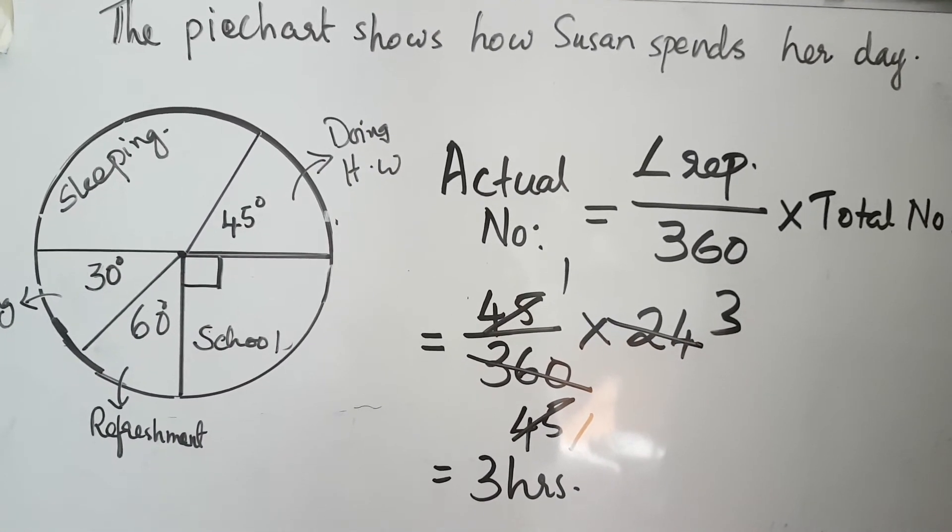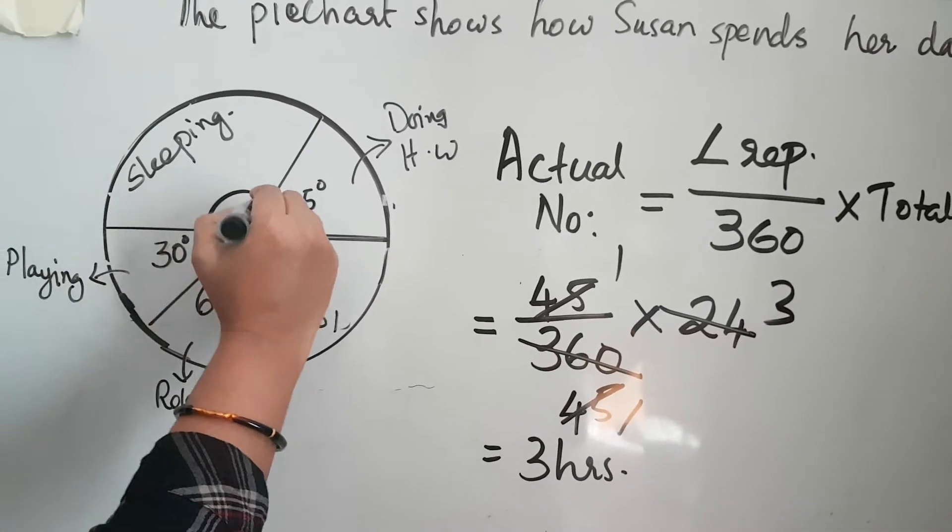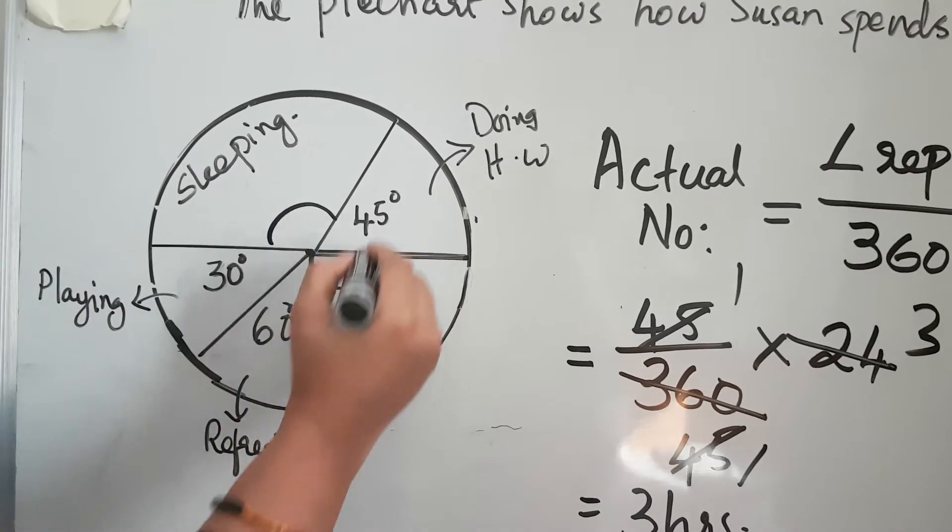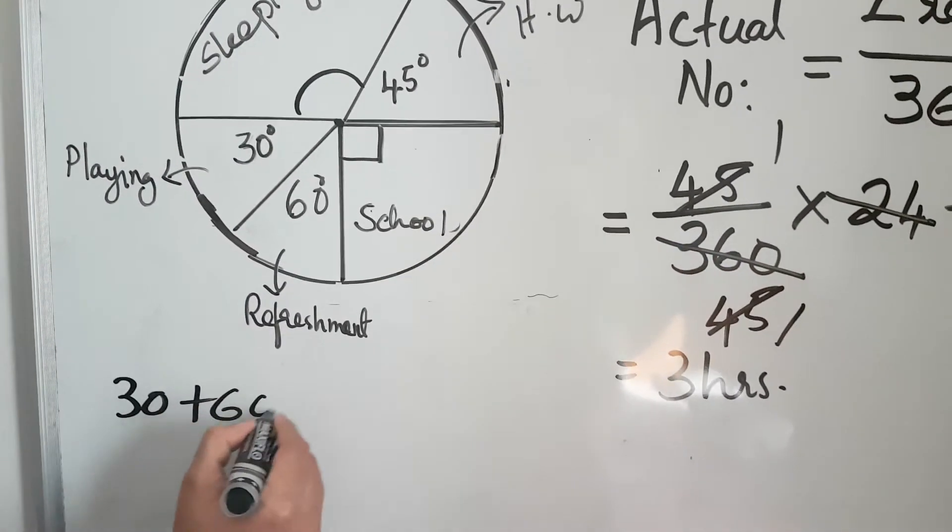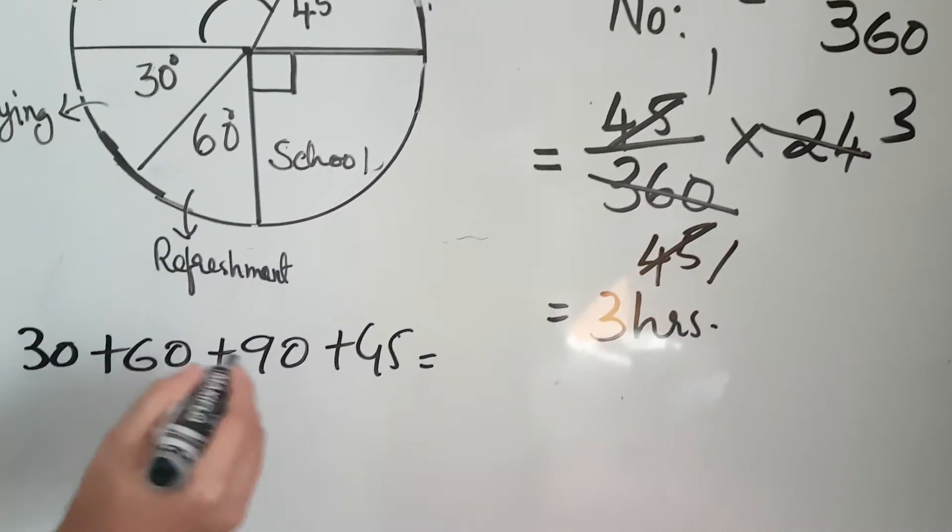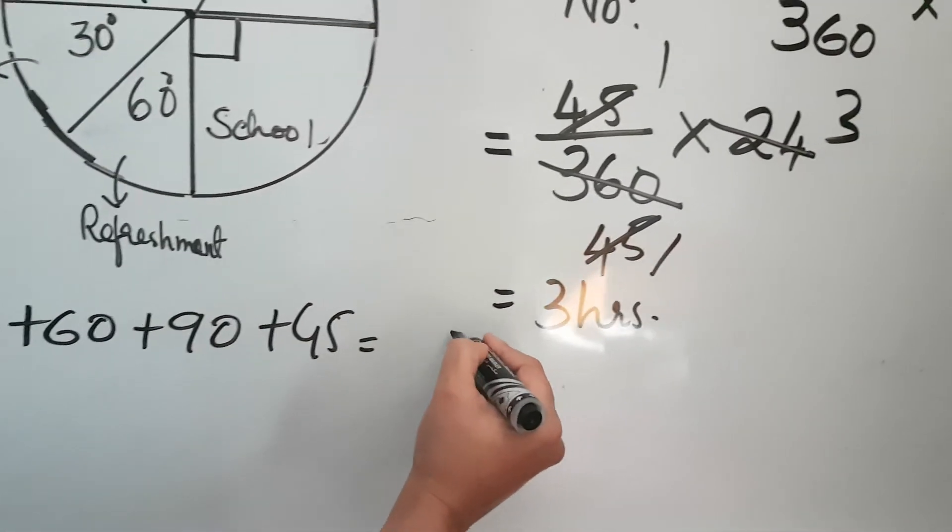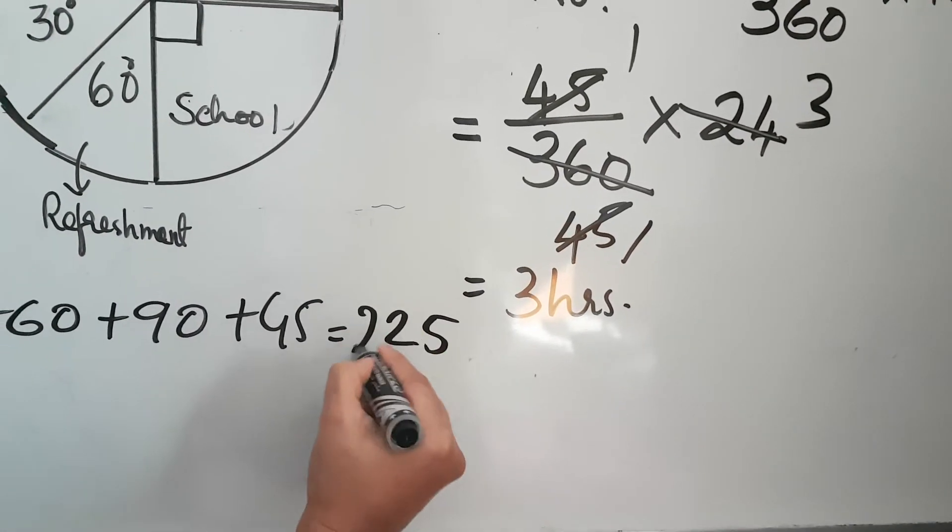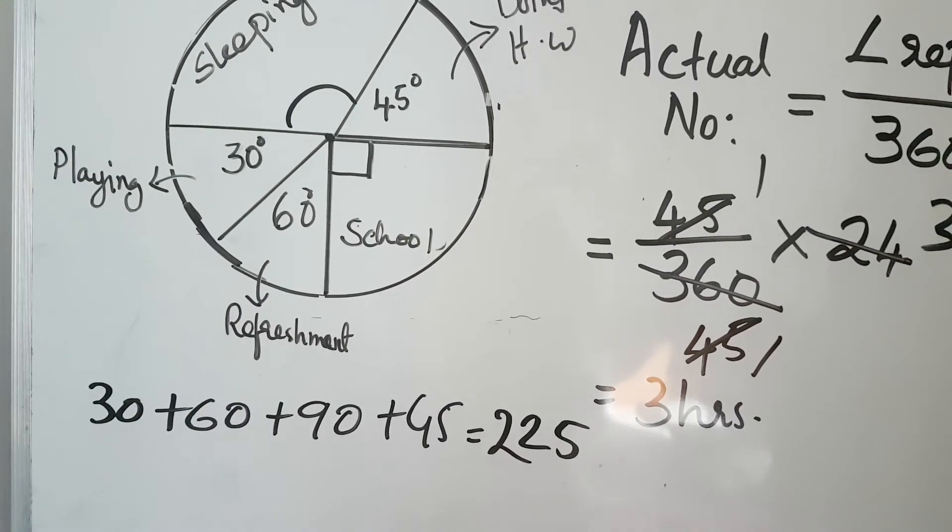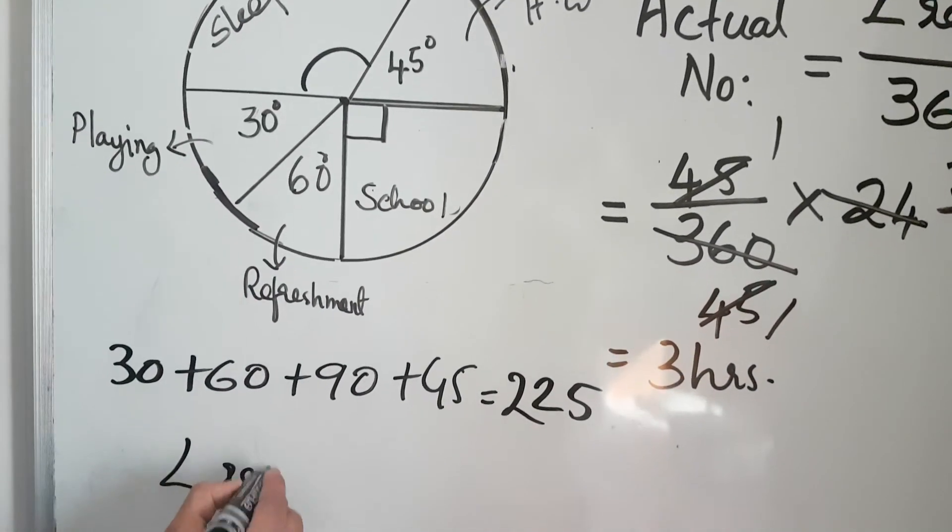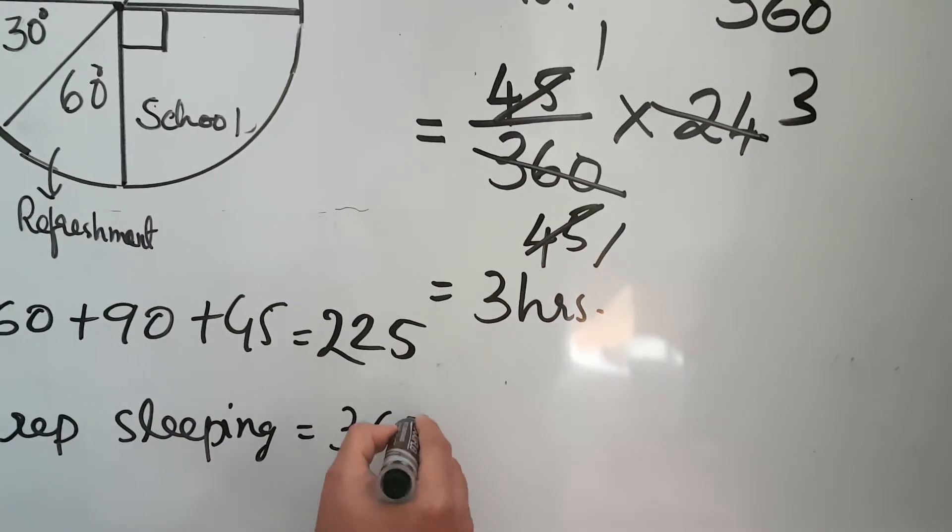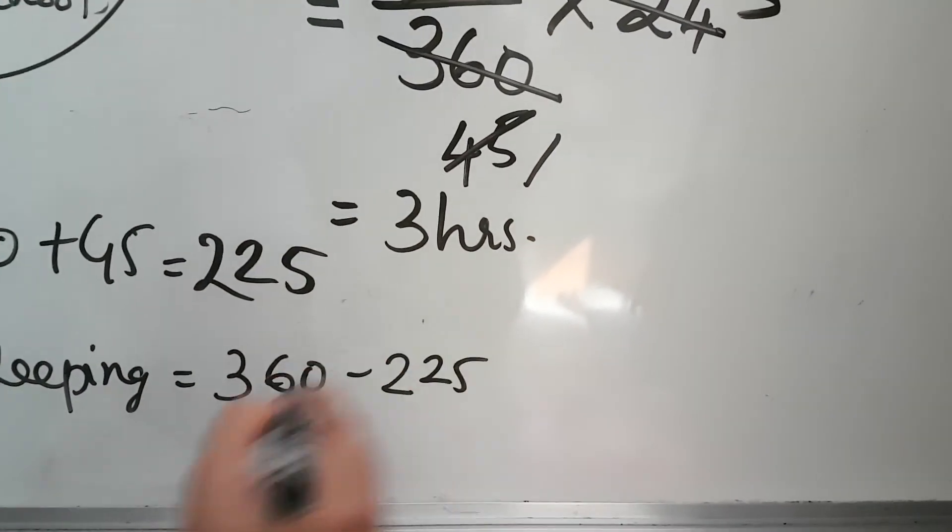Now tell me, how can we calculate the angle representing sleeping? We will add the other angles. That means 30 plus 60 plus 90 plus 45. If we add all of them, 180...so 225 degrees is represented by all the other sectors. So the angle representing sleeping would be 360 minus 225.